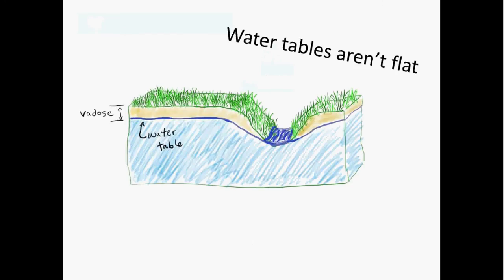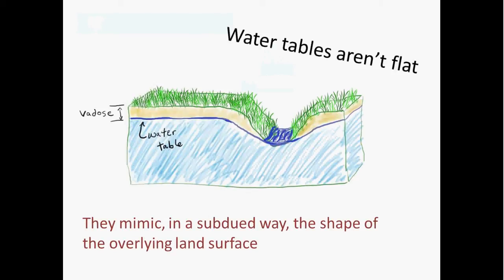Water tables generally are not flat. They tend to instead mimic the shape of the overlying land surface. So they tend to be higher under hills and lower in valleys.